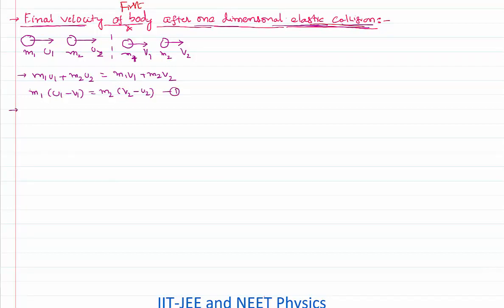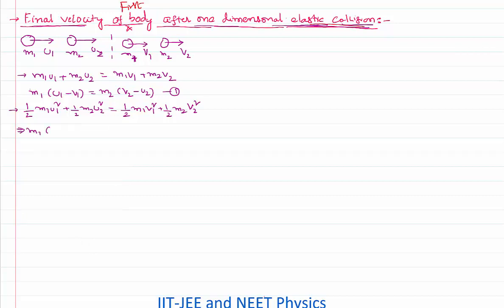Being a one-dimensional elastic collision, not only is momentum conserved, but kinetic energy is also conserved. That means the initial kinetic energy of the system equals the final kinetic energy. So: half m1 u1 squared plus half m2 u2 squared equals half m1 v1 squared plus half m2 v2 squared. All the halves cancel. Rearranging gives m1 times (u1 squared minus v1 squared) equals m2 times (v2 squared minus u2 squared). We call this equation number two.